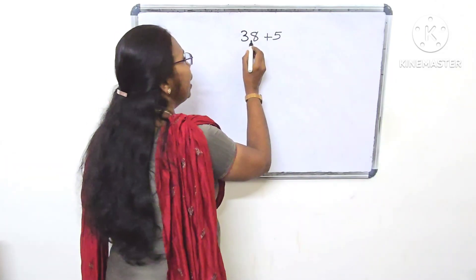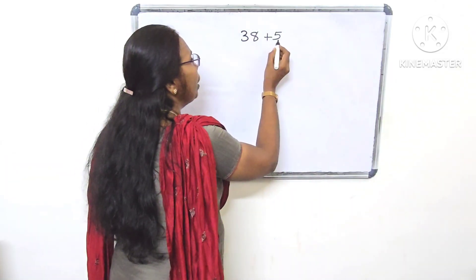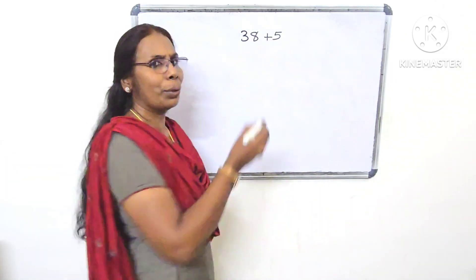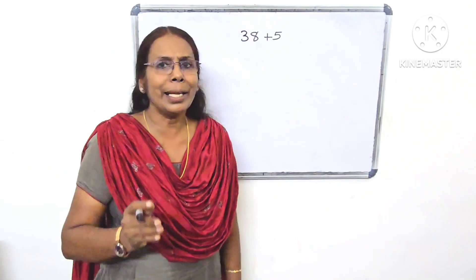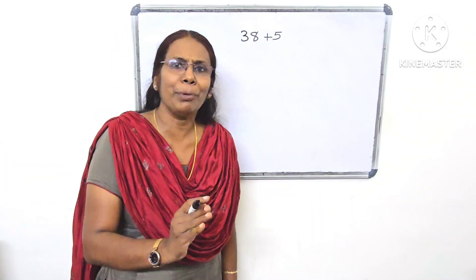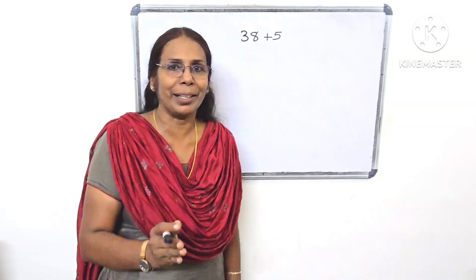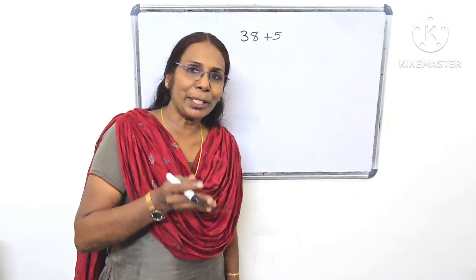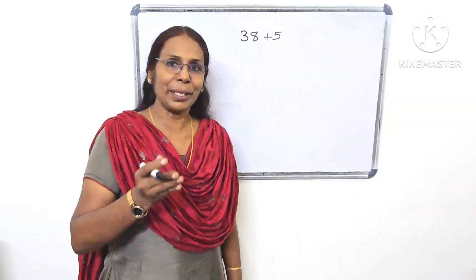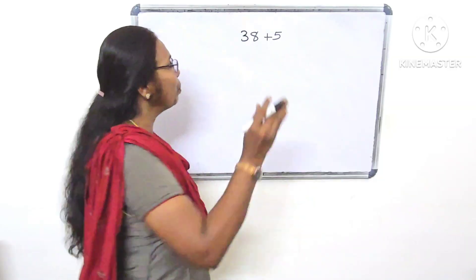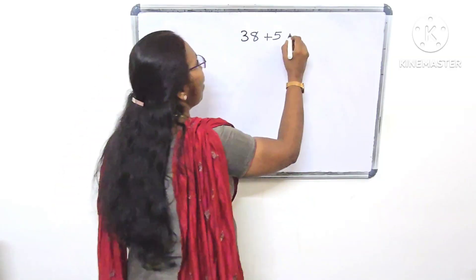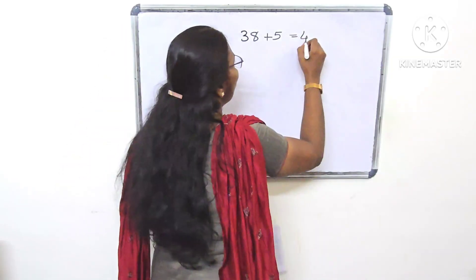How many children are left? We add 38 here. In math, dozens means 38 equals 40, and 40 equals 3.